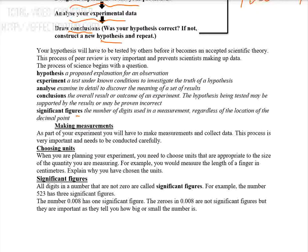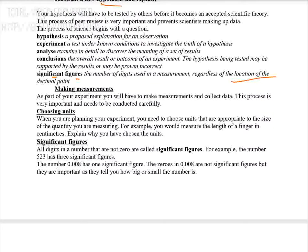Significant figures are the number of digits used in a measurement, regardless of the location of the decimal point. When making a measurement, we must first choose appropriate units. For example, if someone needs to measure the length of a table, they should use centimeters rather than kilometers, because the unit must be appropriate for what is being measured.